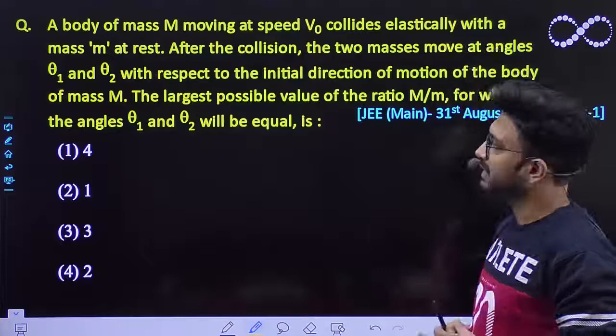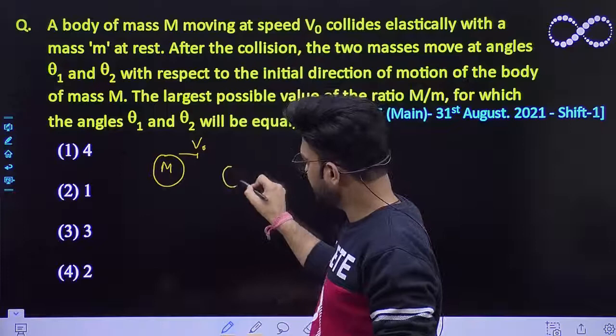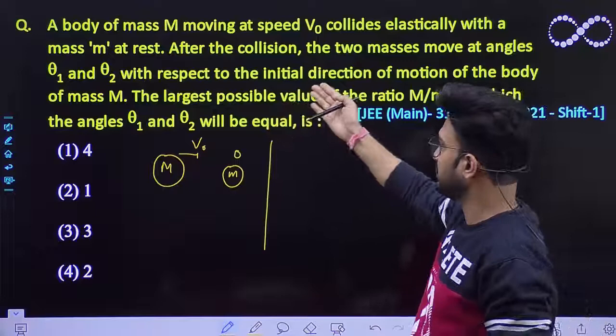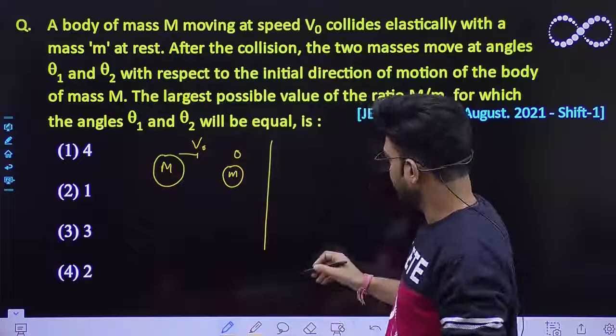The question says: a body of mass capital M moving at a speed of V0 collides elastically with a mass small m at rest. After the collision, the two masses move at angles theta 1 and theta 2 with respect to the original direction of motion of capital M. Find the largest possible value of the ratio capital M by small m for which theta 1 and theta 2 would be equal.